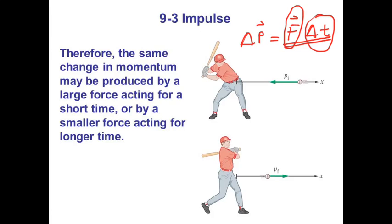If the ball and bat are very hard materials, the impact time delta T is very small. But you can always calculate the force the bat applies on the ball just by observing the time of impact. If the impact happens in 0.1 seconds, by calculating the momentum change of the ball you can calculate the average force, because once you know the momentum change and delta T, you can find the force.